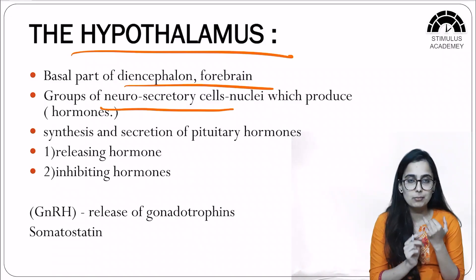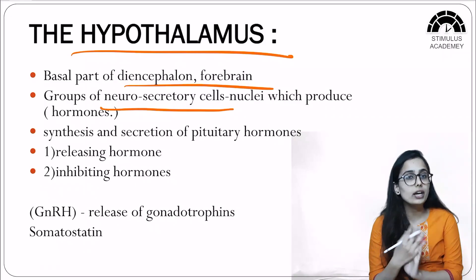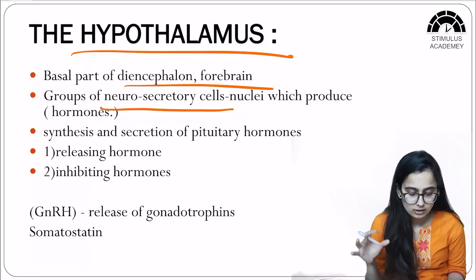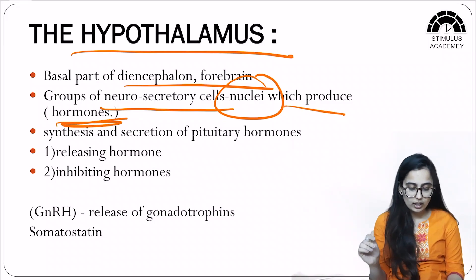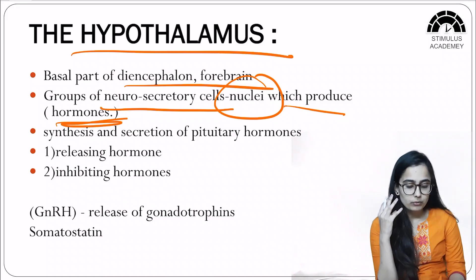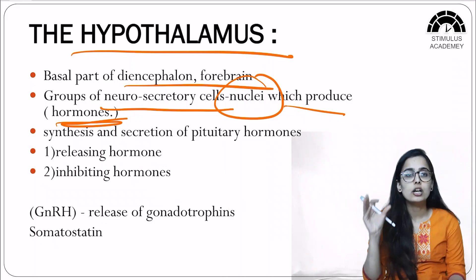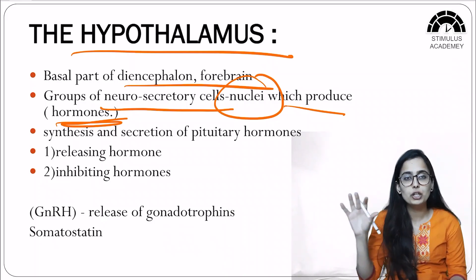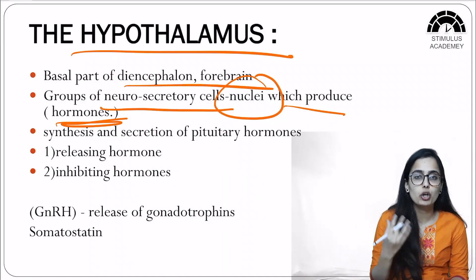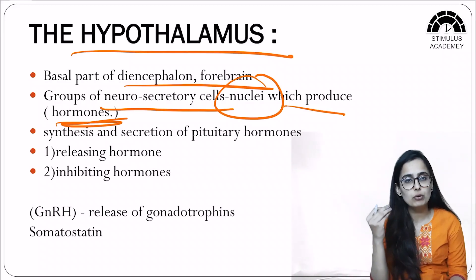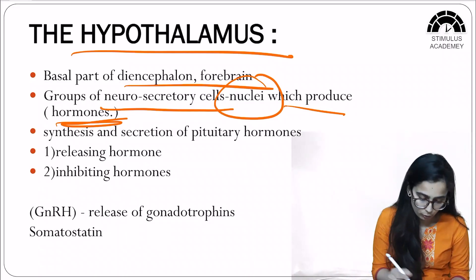'Neuro' means it is related to the neural system and 'secretory' means it is related to the endocrine system as well. These neurosecretory cells are known as nuclei and they produce hormones. The hormones produced by the hypothalamus in turn regulate the functioning of pituitary hormones through their synthesis and secretion.